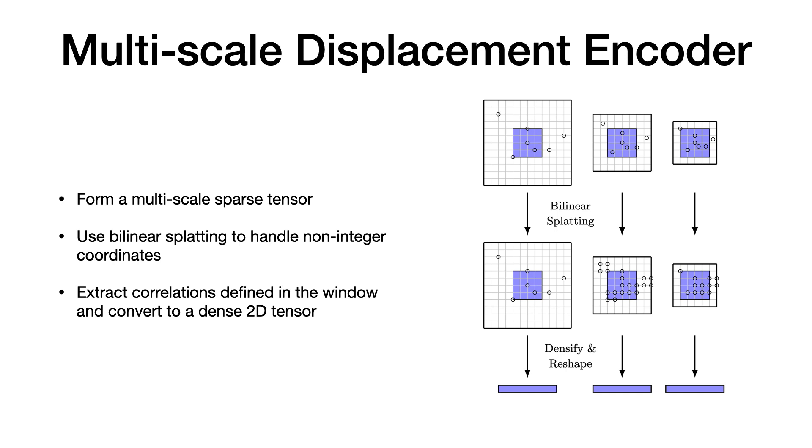At each scale, we define a constant windowed set which captures both large and small motions. The correlations within the windowed set are extracted and converted to a dense vector. Missing values are interpolated with zeros.